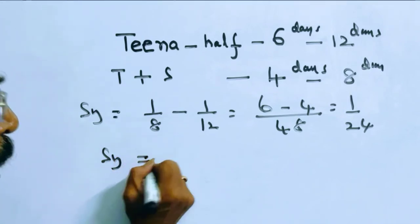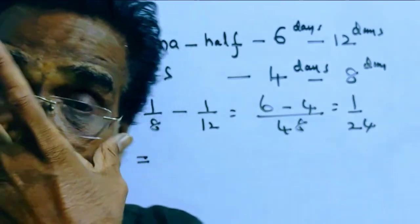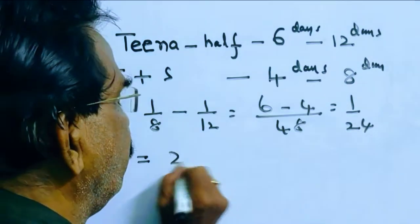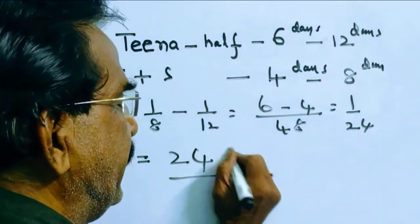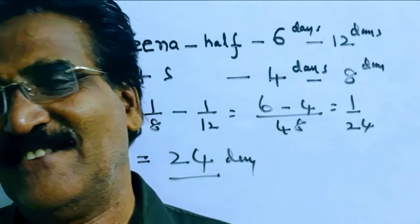So Sean alone can do 1 by 24 work per day. That means Sean alone can complete the work in 24 days. Friends, thank you. Have a nice day.